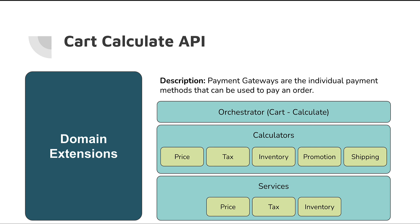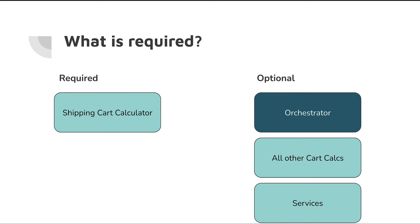So what's absolutely required in order to get checkout working? From what I've been able to do in my instance, what's absolutely required is some form of a shipping cart calculator. It really depends on factors like how much out-of-the-box functionality you're using — like no-tax and pricing — and whether you're planning to use an orchestrator. But in short, you absolutely need a shipping calculator of some sort, and you might also need an orchestrator, a tax calculator, or a pricing calculator. Cart calculator pieces are the ones that really depend on your implementation.